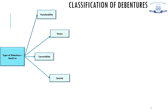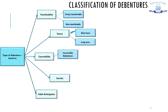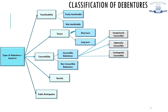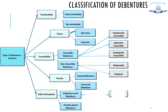Debentures may be classified on various grounds such as transferability, tenure, convertibility, security, and public participation. Based on transferability, debentures may be freely transferable or non-transferable. Based on tenure, debentures may be short-term or long-term. Based on convertibility, debentures may be convertible or non-convertible; convertible debentures may be further divided into compulsorily convertible, optionally convertible, and contingently convertible debentures. Based on non-convertibility, debentures may be redeemable or perpetual. Based on security, debentures may be secured or unsecured. Based on public participation, debentures may be publicly placed (mandatory listed) or privately placed (listed or unlisted).